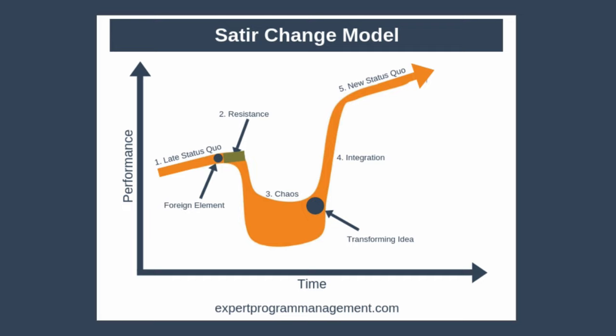Next up, we have the Satir Change Model. This model was designed to help people improve how they cope with major unexpected change. Although developed initially for family therapy, it also applies to how people cope with organisational change. At the heart of the model is the conviction that it is always possible for things to get better — however, this takes time and things usually get worse before they get better. On the vertical axis we have team performance and on the horizontal axis, time. The curve in the diagram is deliberately not a thin line, meaning team performance can oscillate within the bounds of the curve. There are five stages to the model.